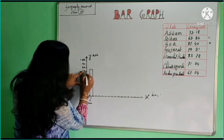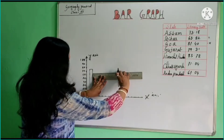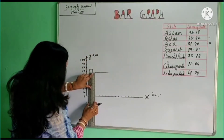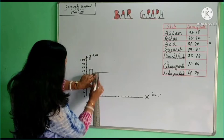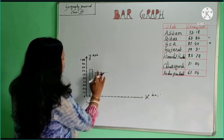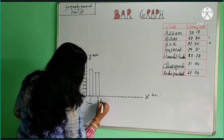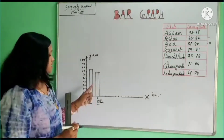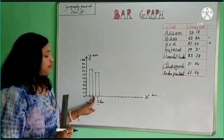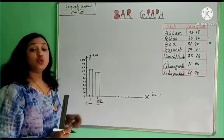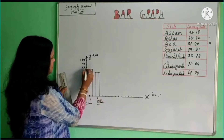Just put your scale and mark 1, 2, 3 — so here is 63. This represents 63.82, which represents our Bihar state. So the first bar represents Assam, the second bar represents Bihar, with a gap of one centimeter between the two bars. Next is Goa with 87.40.